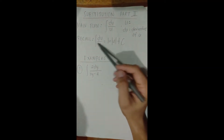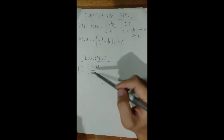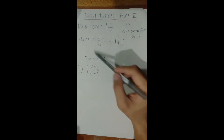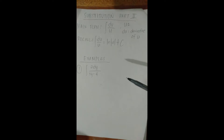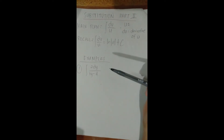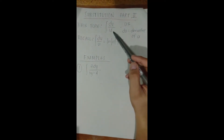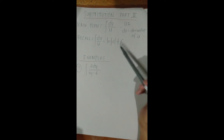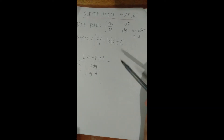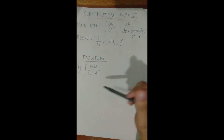What's the difference between part one and part two of substitution? In part two, the function is already a rational expression — a fraction. Part one dealt with non-fraction functions. We use this part when dealing with rational or fractional functions. If you let the denominator be your u and take its derivative, the derivative appears in the numerator — that's the ln|u| + C pattern.